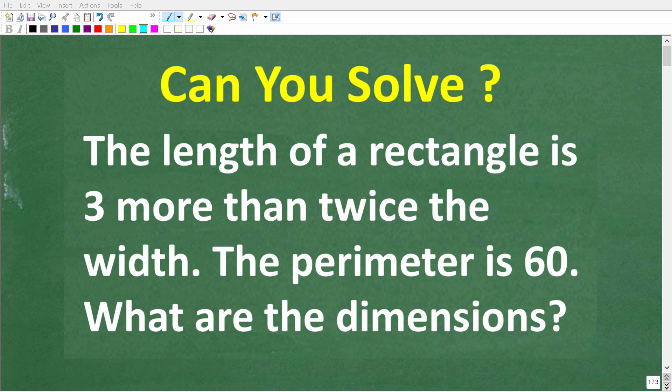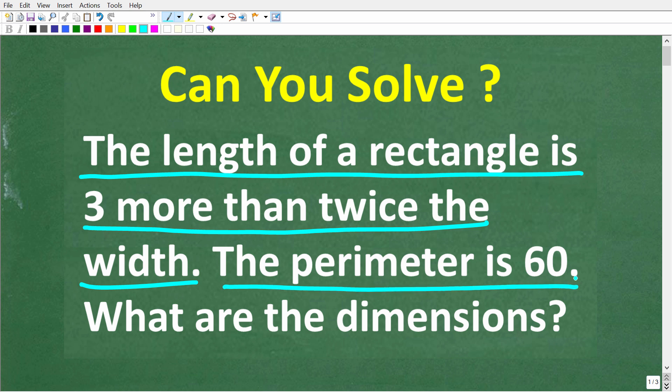Let's see if you have the math skills to figure out how to solve this math word problem. Here is the question. The length of a rectangle is three more than twice the width. Now the perimeter of this rectangle is 60. What are the dimensions, i.e. the width and the length?